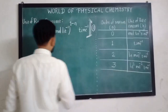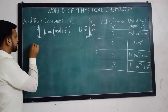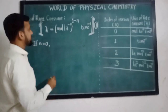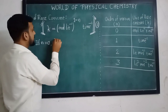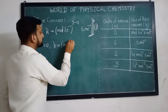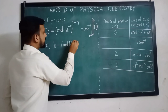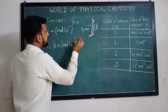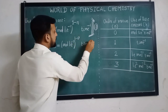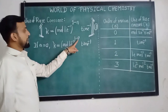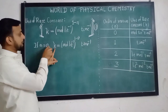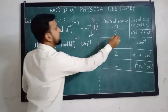If n is equal to 0, that is the order of reaction is zero, then from expression 1, K is equal to mol per liter raised to 1 minus 0, per time. 1 minus 0 is 1, therefore the unit of K for a zero order reaction is mol per liter per time.